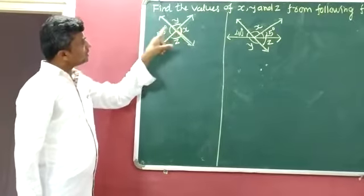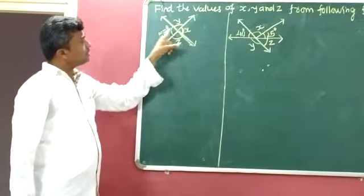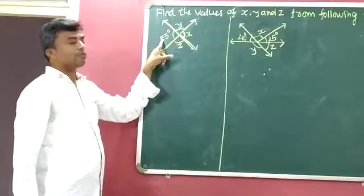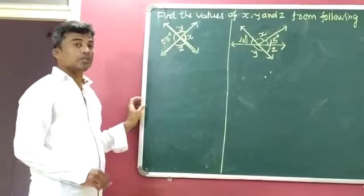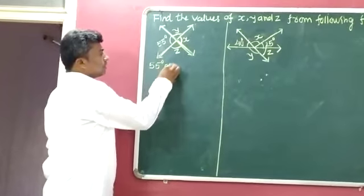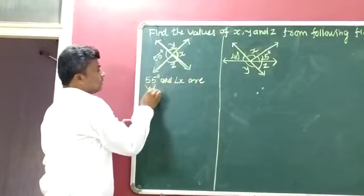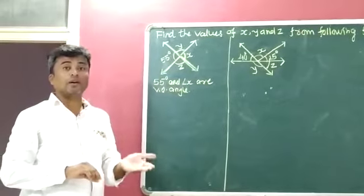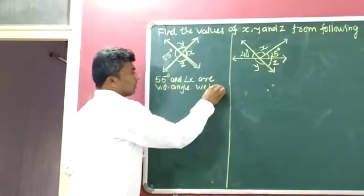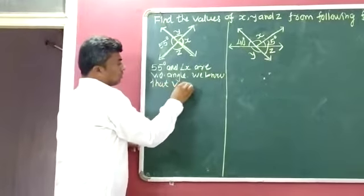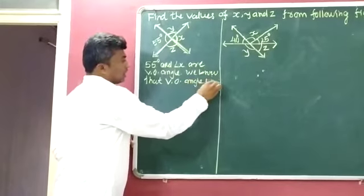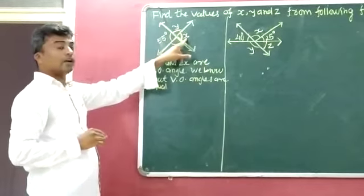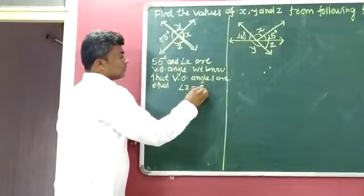Consider angle X and angle 35. Both are exactly opposite to each other and they cannot have any common arms. So angle X and angle 55 both are vertically opposite angles. We know that vertically opposite angles are equal. So whatever measurement of 55 degrees, it is also the measurement of angle X. So angle X is equal to 55 degrees.